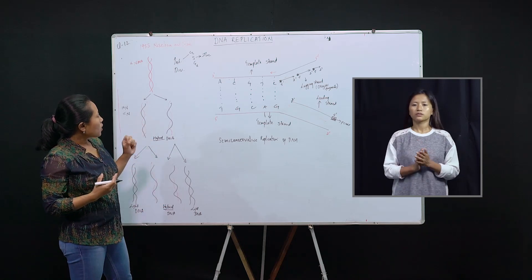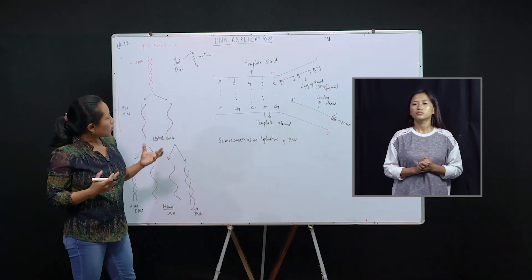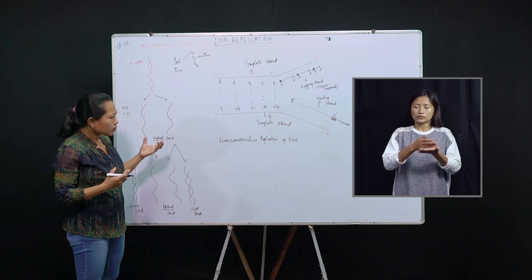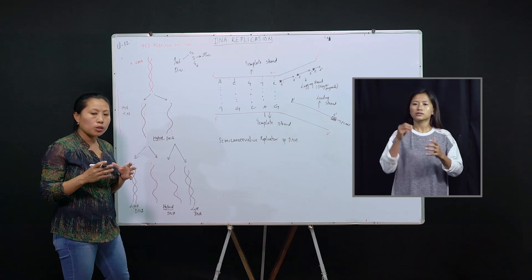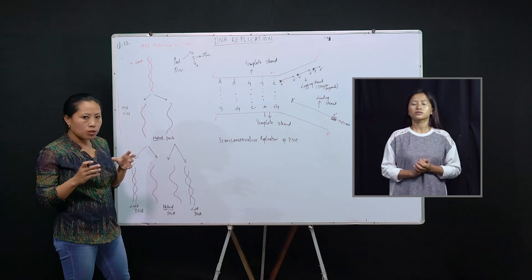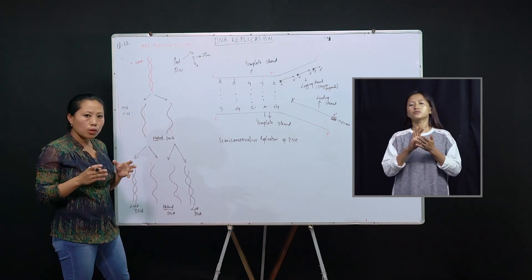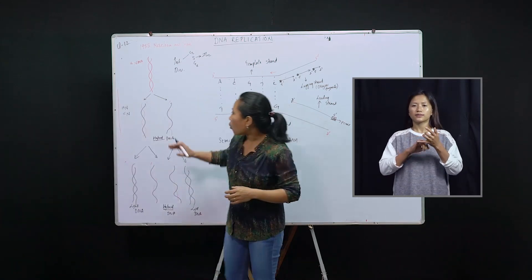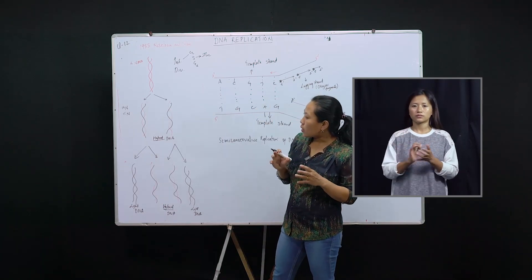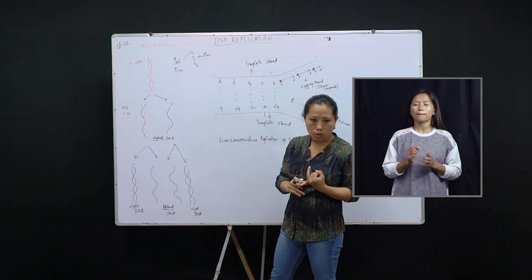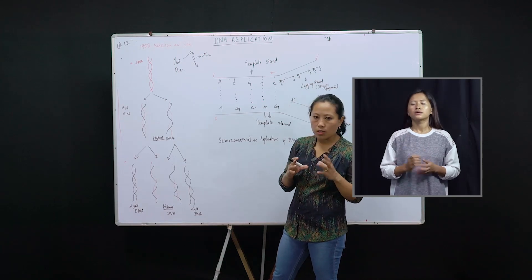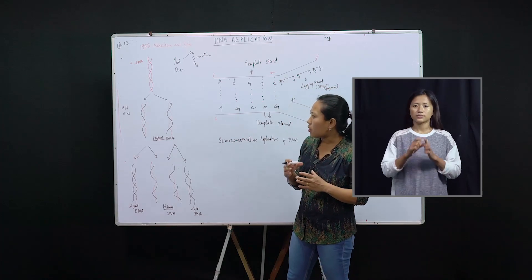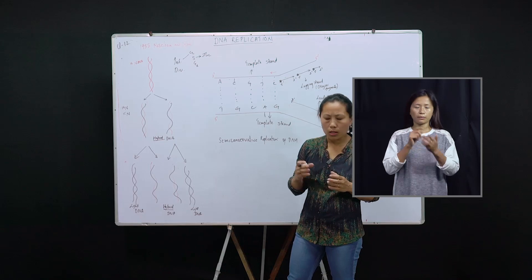Replication takes place in the S phase in both prokaryotes and eukaryotes, and the specialty of DNA replication is that it replicates semi-conservatively. Semi-conservatively means that the parental strands — we know DNA is a double helix consisting of two polynucleotide chains — during replication, these two parental strands separate and direct the synthesis of new daughter strands such that each new daughter DNA molecule consists of one parental strand and one new strand. So half of the parental strand is conserved and passed on to the daughter cell. This is known as semi-conservative replication of DNA and was proposed by Watson and Crick in 1953.